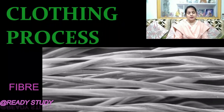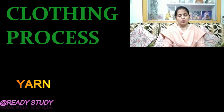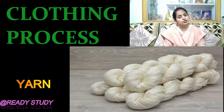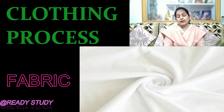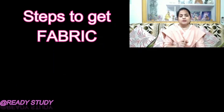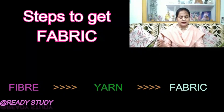A yarn is a comparatively thicker strand of a material which is made by twisting many fibers together. A fabric means cloth — a fabric is made when many threads are woven together, and from the fabric we make clothes. The steps to get a fabric are: fiber converts into yarn, and yarn converts into fabric.